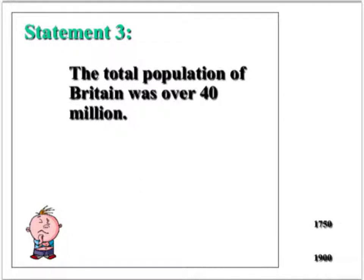Statement 3: The total population of Britain was over 40 million. This was Britain in 1900, after a massive growth in population.